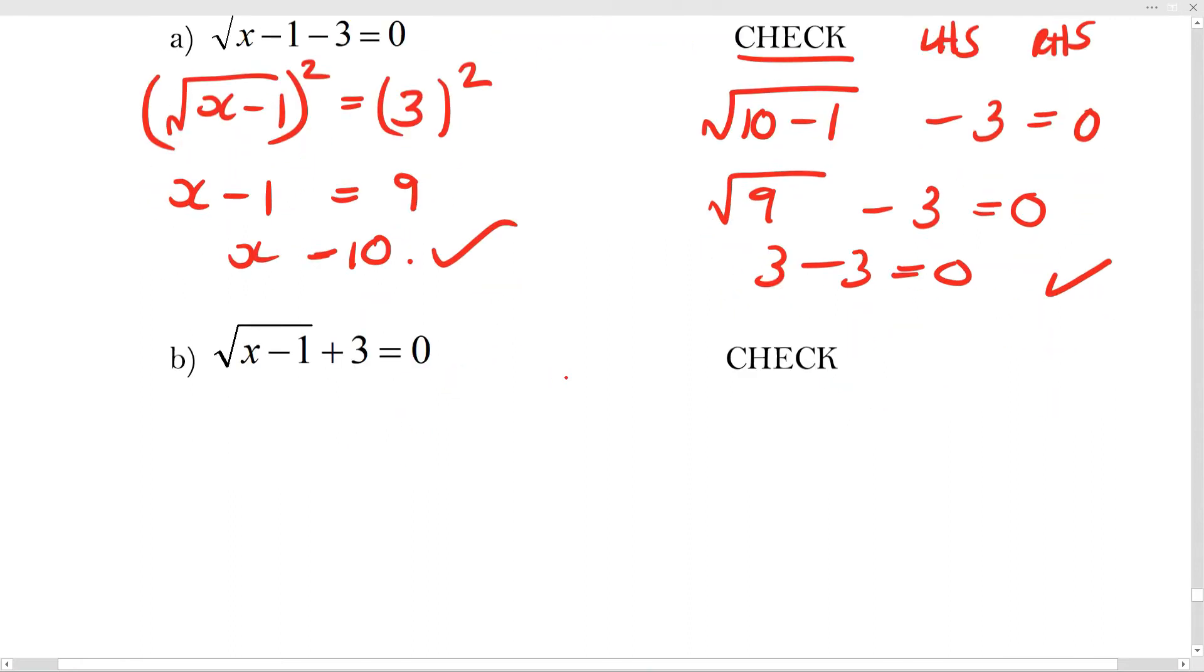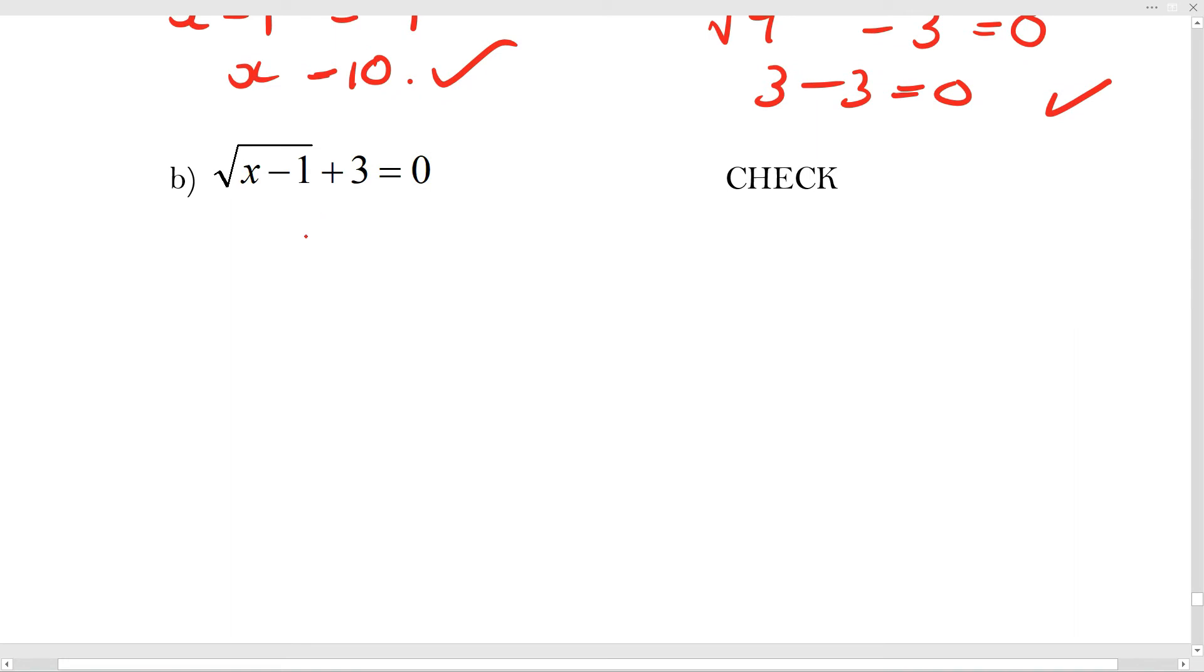What about this one? Same concept. I'm going to keep my surd by itself and I'm going to move the things that are not in the surd sign. And you might know immediately that it's not going to work. But let's just show you what happens and why we need to do the check. So if I go through the whole process here and I square both sides, I'm going to have x minus 1 equals 9.